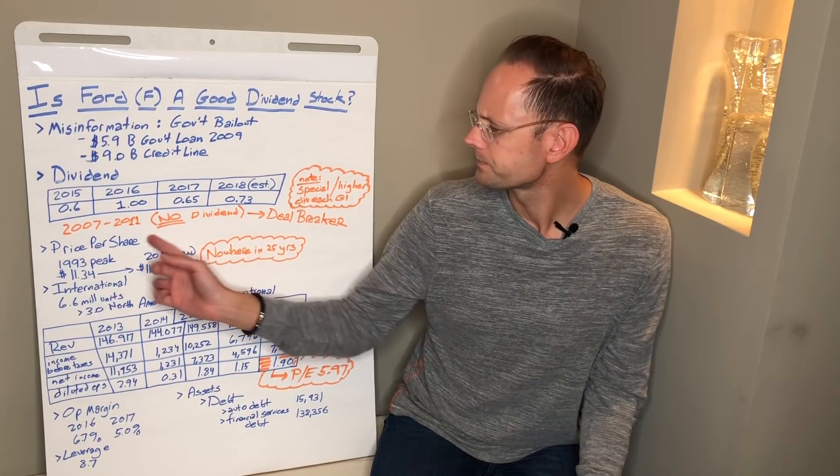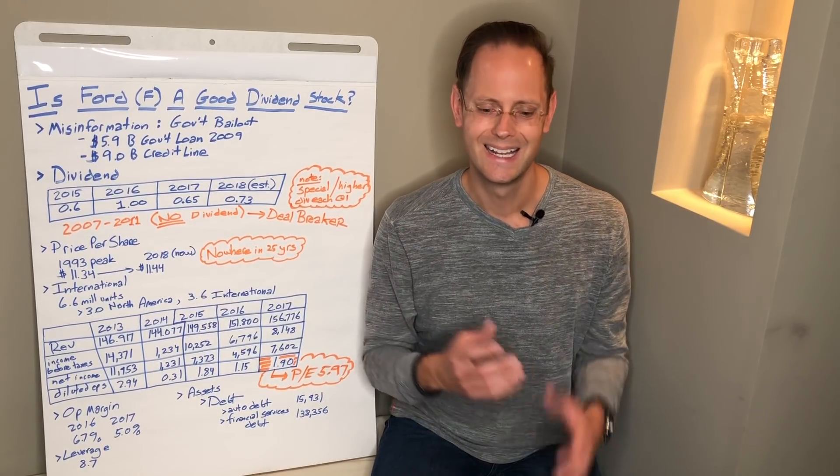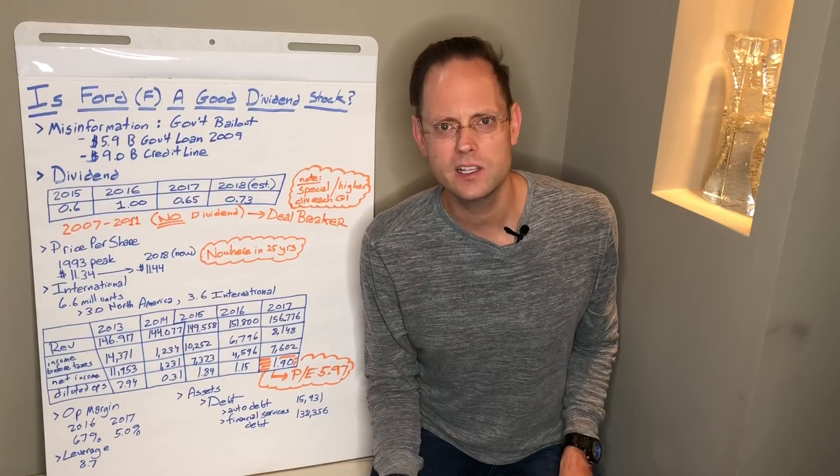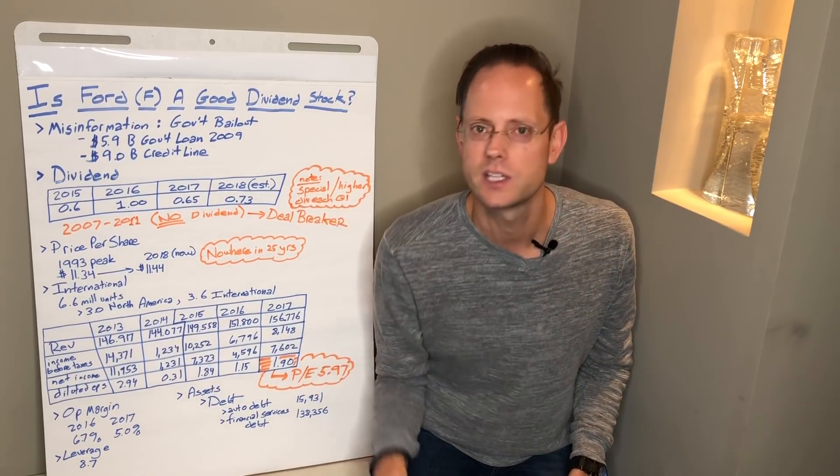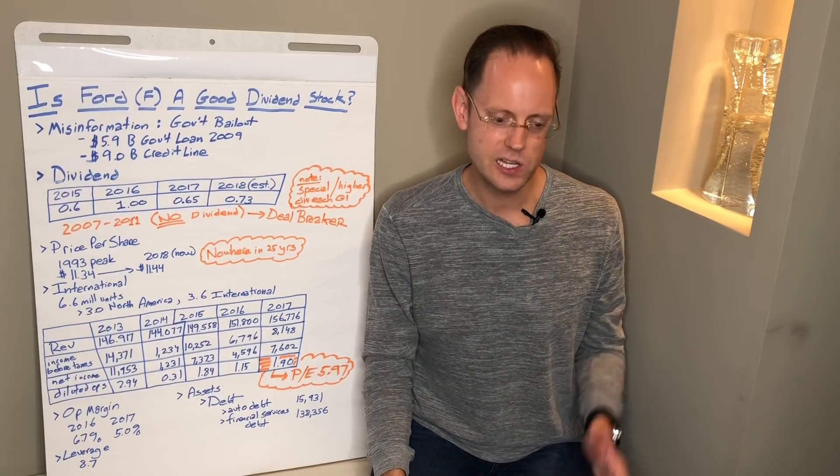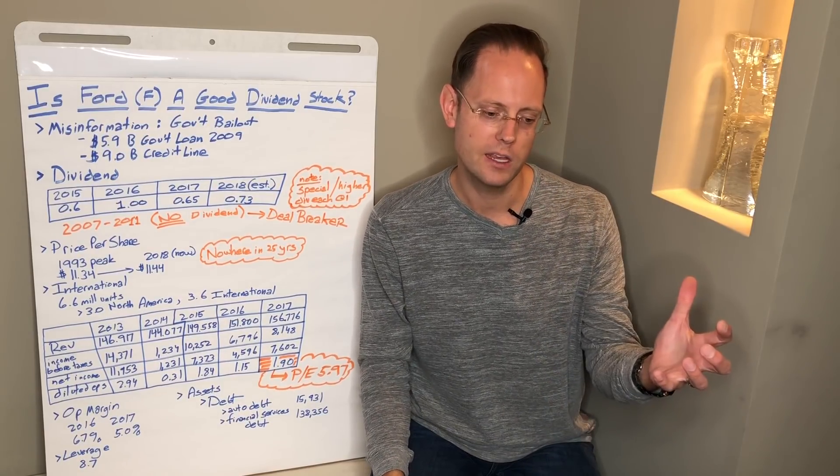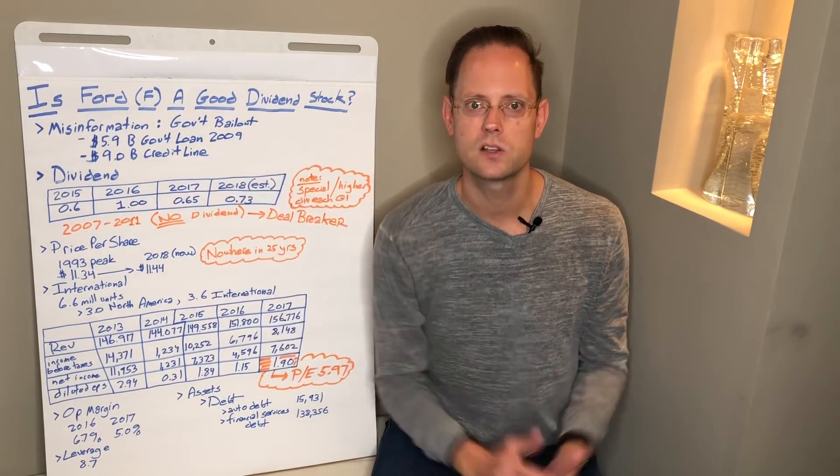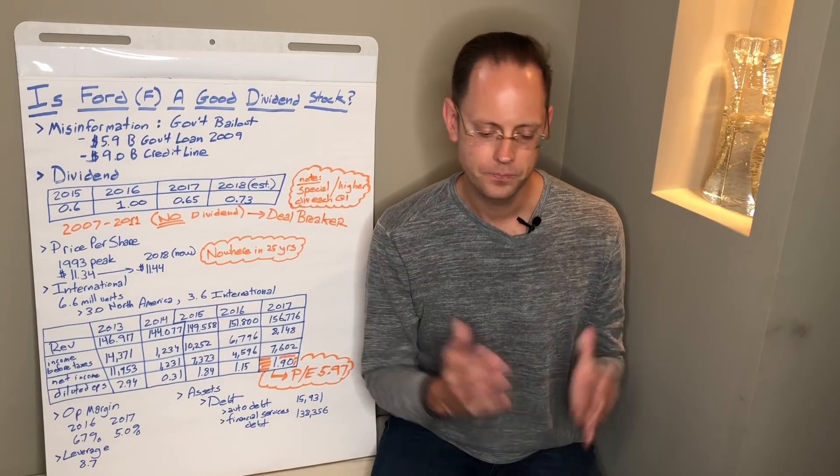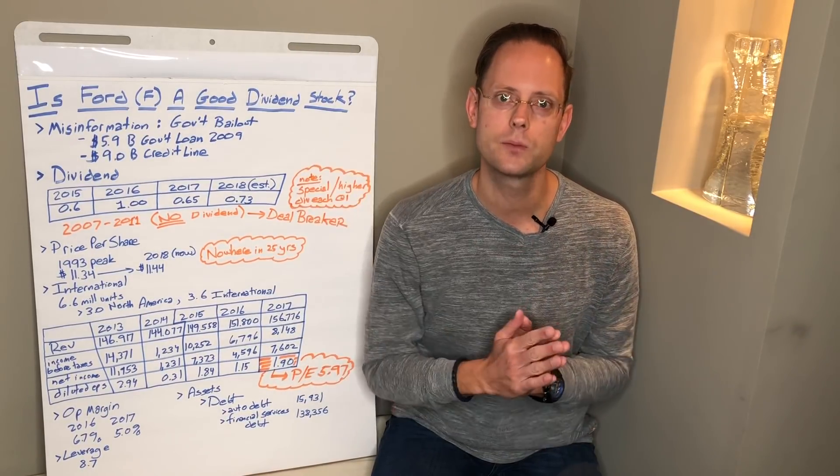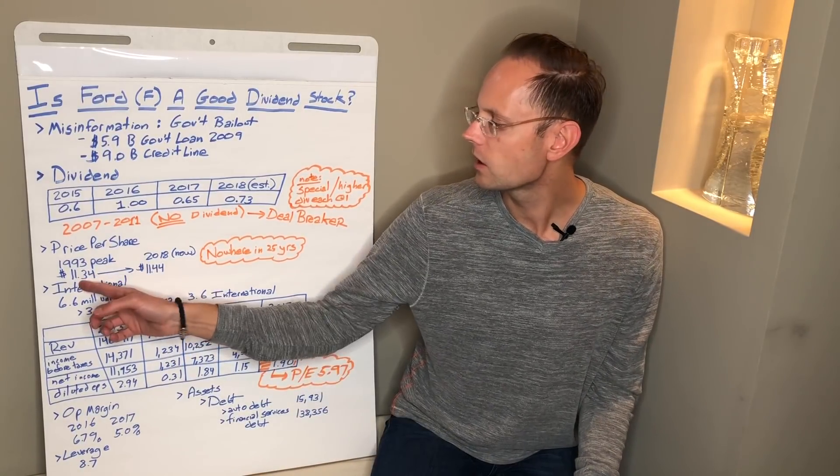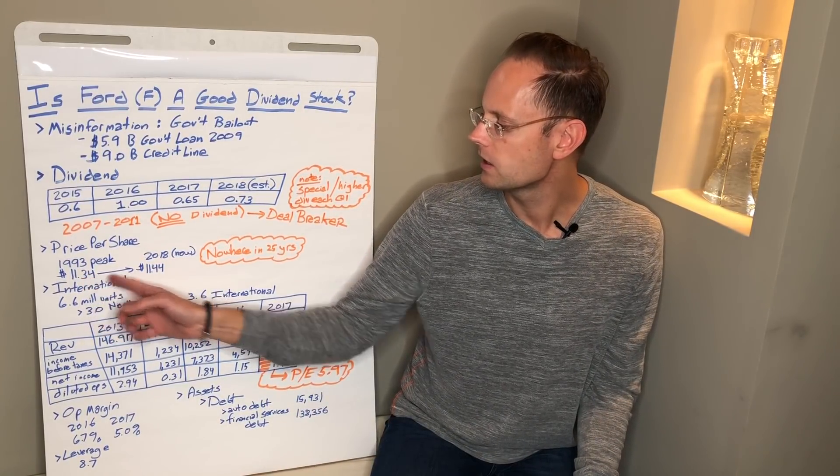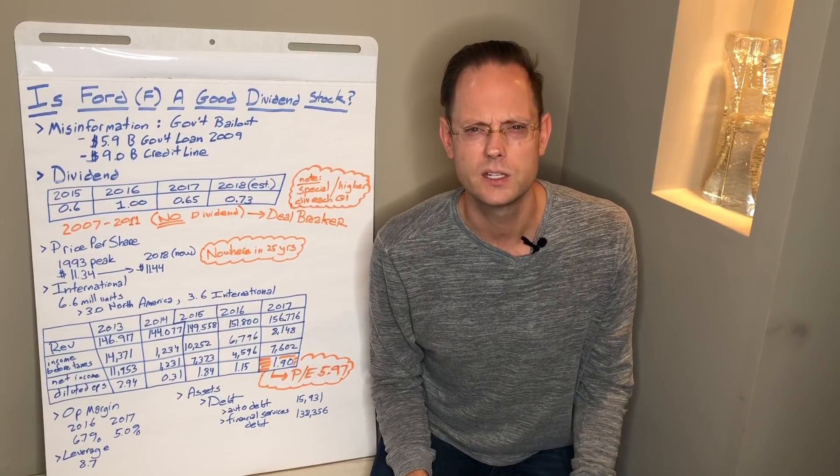Something else I want to look at here. Price per share. I went back in time. Yes, I cherry picked this. 1993, I looked at the absolute highest price I could find during the year. That said, when one looks at the high watermark in 93 versus now in 2018, 25 years later, I would expect to see some capital appreciation. This company has gone nowhere. It has gone from $11.34 in 93 to $11.44 in 2018.